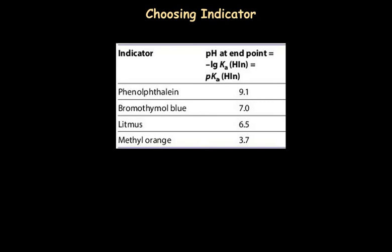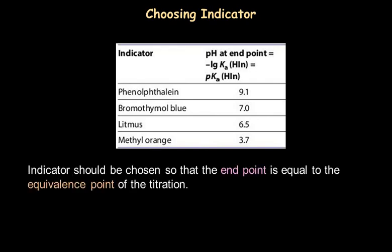In our next video we will see how to choose an indicator for a particular type of titration. In short, an indicator should be chosen such that its end point — where the concentration of the molecular form equals the concentration of the anion form — matches the equivalence point of the acid-base titration. Since titrations may involve a strong acid or weak acid titrated with a strong or weak base, the equivalence point will vary and accordingly the indicator chosen will also vary.